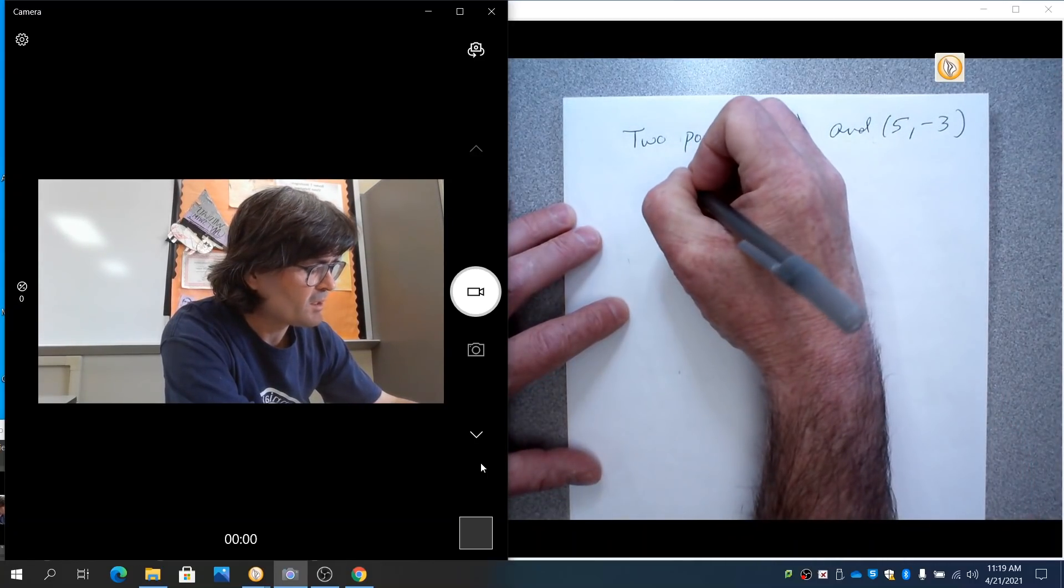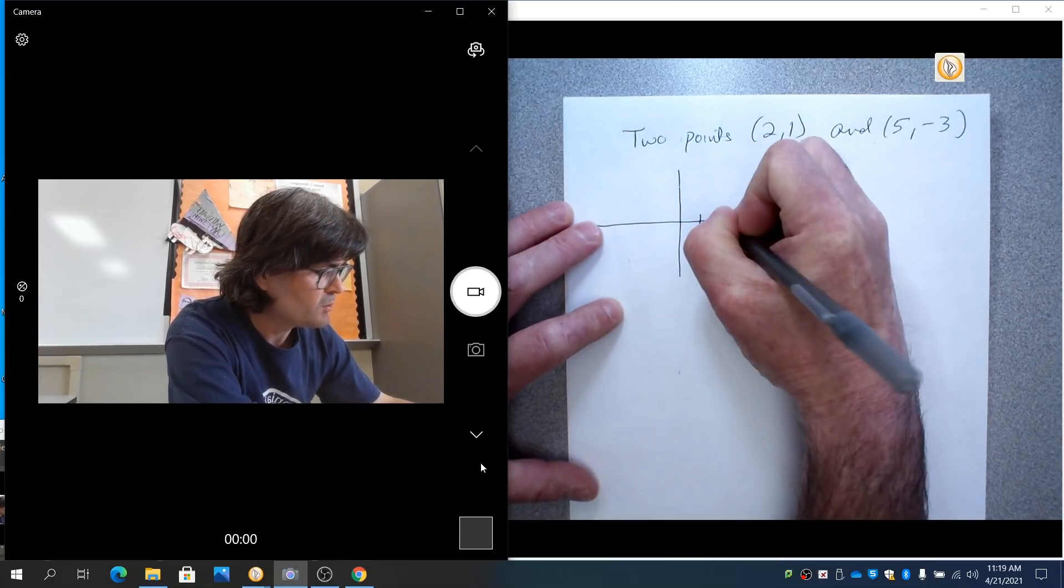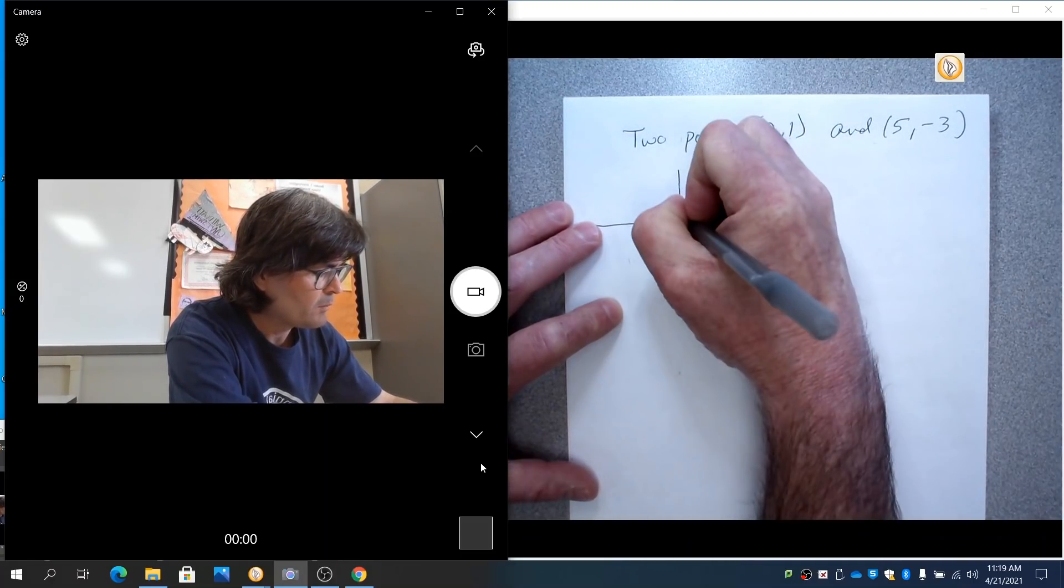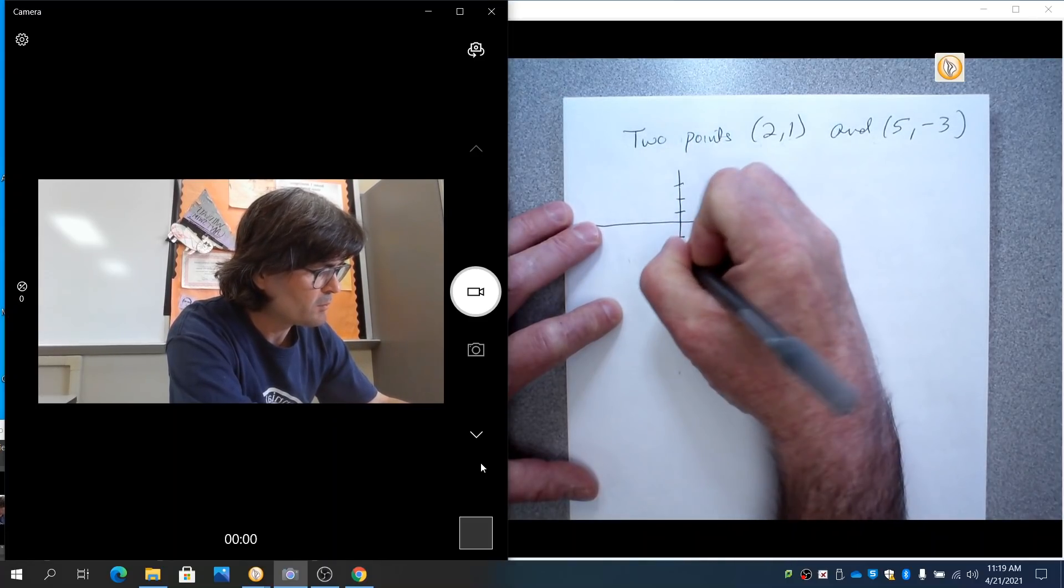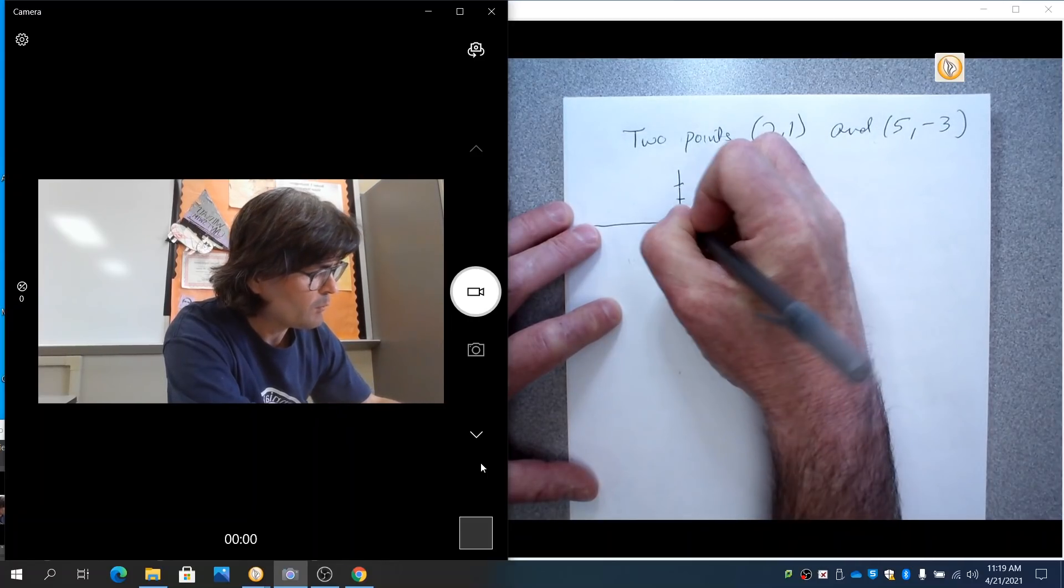So let's just, I'm going to put those on a graph. It's not necessary to put those on a graph, but it might be interesting. The first point is (2,1). That's right here.